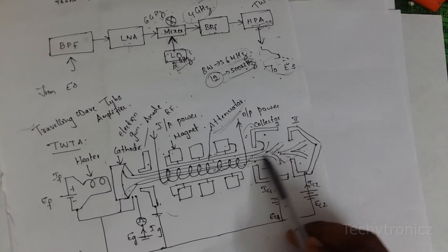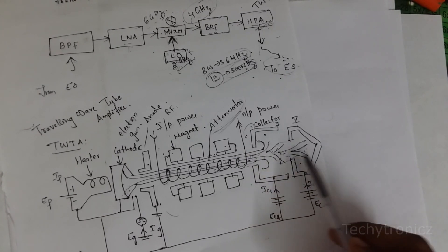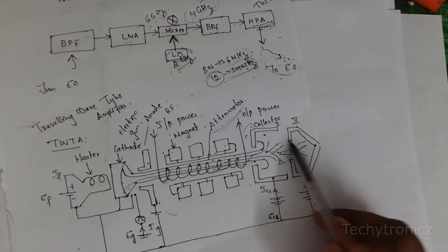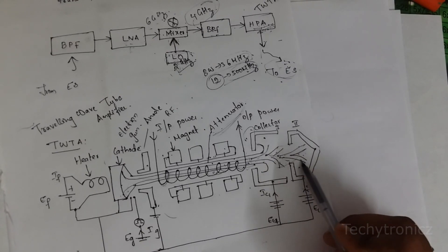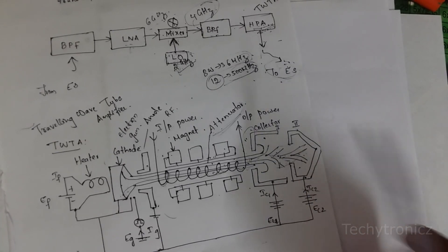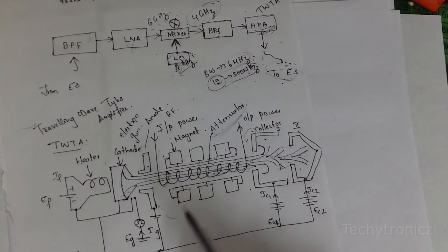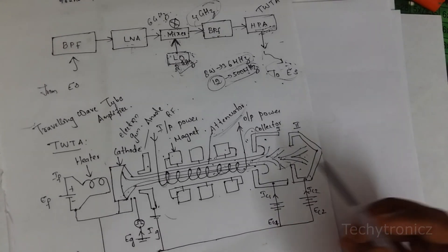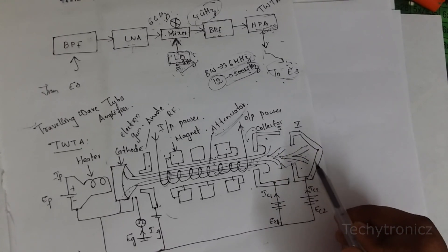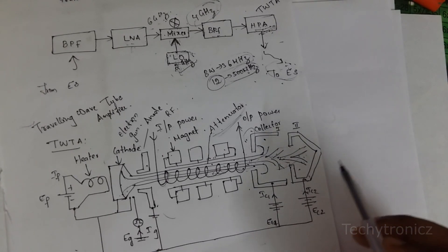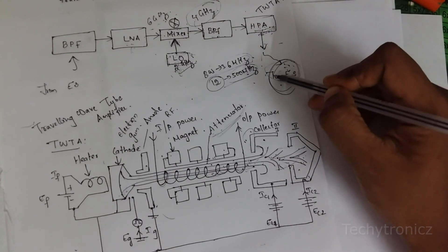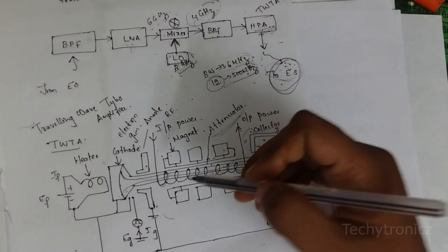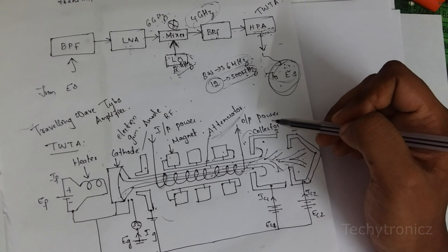The electron beam and RF signal power will be collected in collector 1 and collector 2. When it collects the electron beam and RF signal power, these two signals combine and strengthen or amplify the signal. That is what is happening in the high power amplifier by using the traveling wave tube amplifier. The amplified signal is given to the receiver side of the earth station.